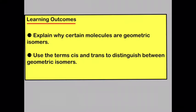So by now you should be able to explain why certain molecules are geometric isomers and you should be able to use the terms cis and trans to distinguish between geometric isomers.